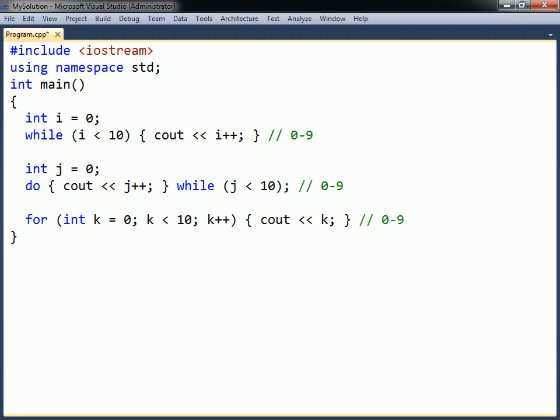The for loop is used to run through a code block a specific number of times. It uses three parameters. The first one initializes a counter and is always executed once before the loop.